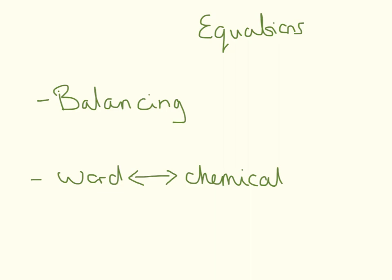There's going to be something about equations. At a higher tier you're going to have to balance equations. If after really trying you can't get it, write down two, because chances are that's going to be close to the answer — but only do that if you really, really tried. They're probably also going to want you to either convert from a word equation into a chemical equation, or a chemical equation into a word equation. If they ask you to do this, read the question really carefully, because if they ask for a word equation and you write down a chemical equation, you're not getting the marks.